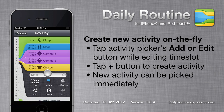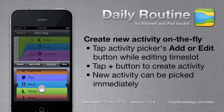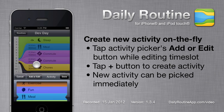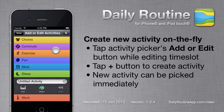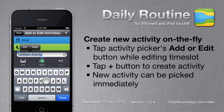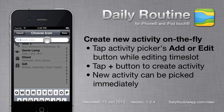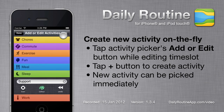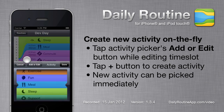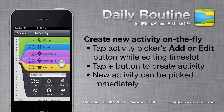While we're filling up our routine, we might realise that we need a new activity. To do so, just tap the Add or Edit Activity button inside the Activity Picker. Here we can edit existing activities or create new ones. Tap the Plus button to create a new activity. We'll give the new activity a name and an icon. Returning to the list, we pick our new activity and there we have it.